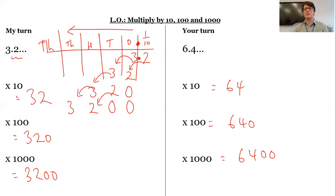And that's not very surprising if you think about it, because I know that 6 times 10 is 60. So 6.4 will be 64. 6 times 100 is 600. 6 times 1,000 is 6,000. And then the next digit will still be that digit 4.